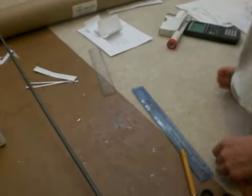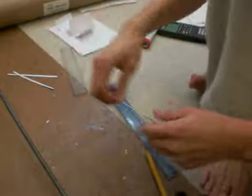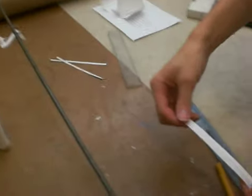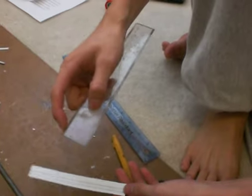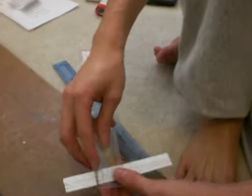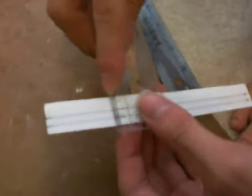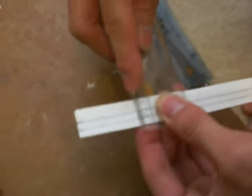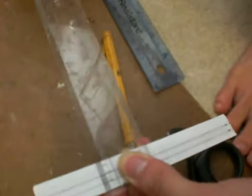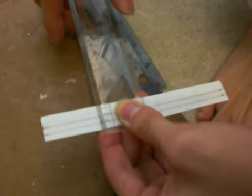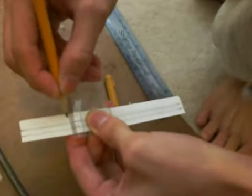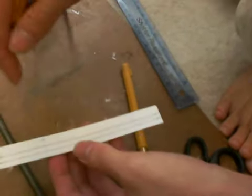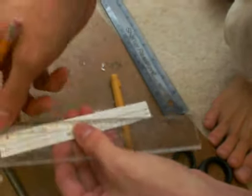After you flatten it out, measure however much length or width you want for your rifling. This one I'm using 0.5 centimeter or 5 millimeter. Basically just put a dot on both sides and connect the dots.